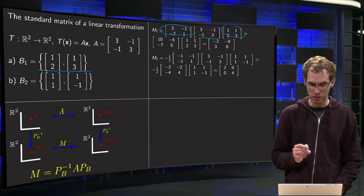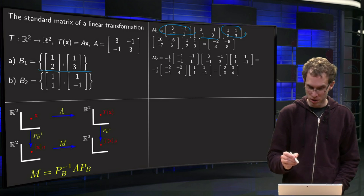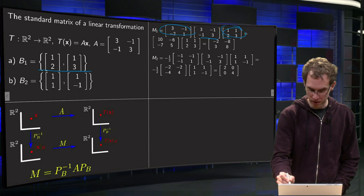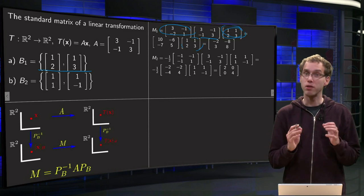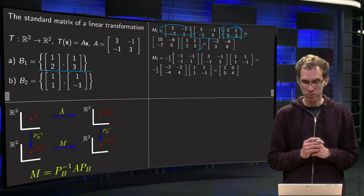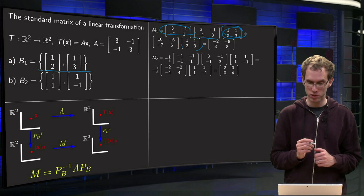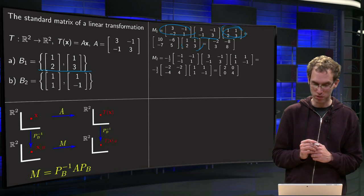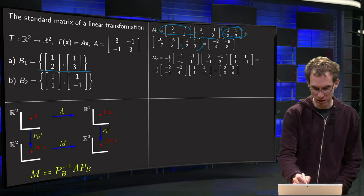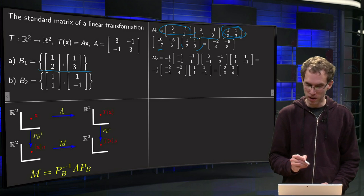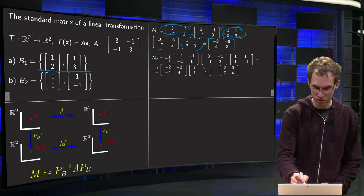and first we compute our first product. So we leave this matrix over there and compute the first product: 3 times 3 plus minus 1 times minus 1 equals 10, minus 2 times 3 equals minus 6, minus 1 equals minus 7, that's a minus 7 over there, minus 3 minus 3 equals minus 6 over there, and 2 plus 3 equals 5 over here.